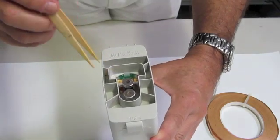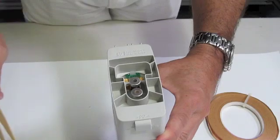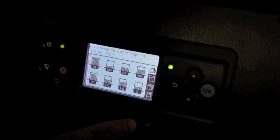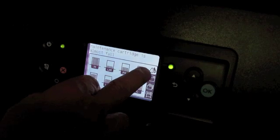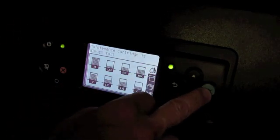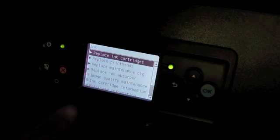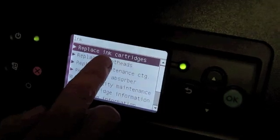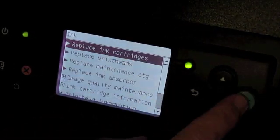Let's see the next step, which is the installation in the printer. Before you install the cartridge, go to the printer and select ink in the menu and click OK. After that, you will select replace ink cartridges and click OK.